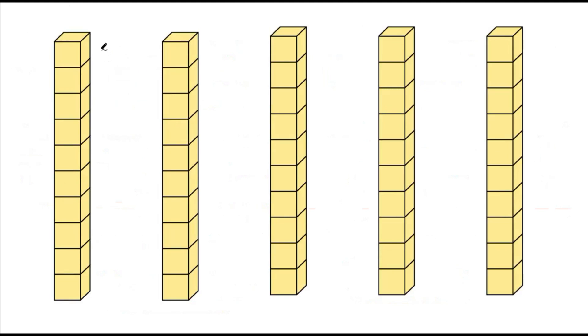Here we have 50 blocks. How many groups of 10 make 50? Let's count. If each row has 10, and there are 50 blocks, how do we work this out? 50 divided by 10 will give us an answer of 5.